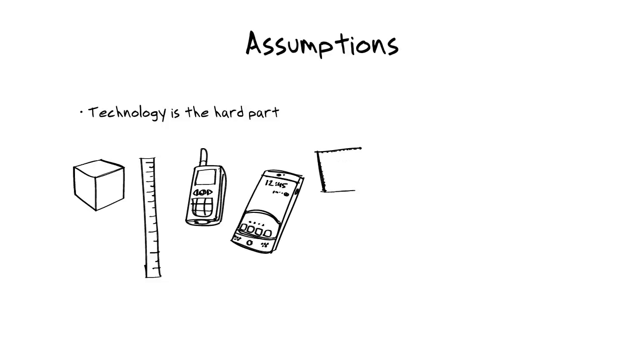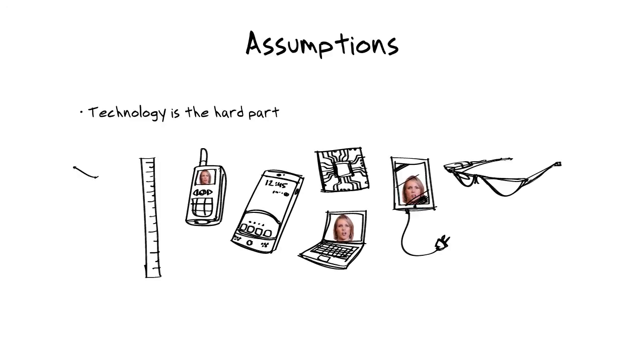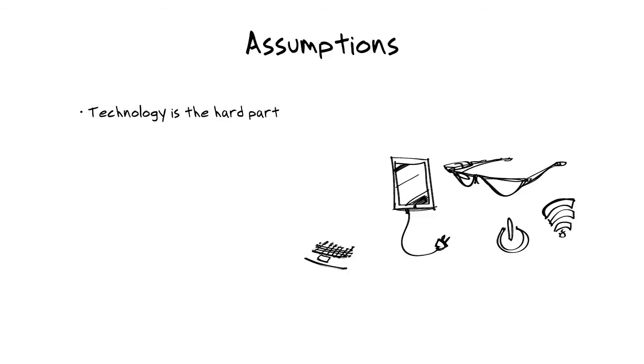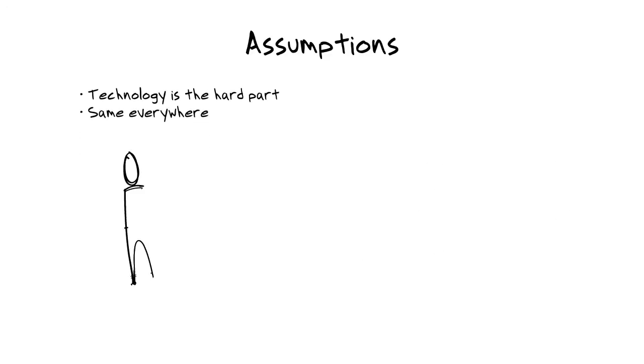When we do this, we're really taking on a few assumptions that absolutely demand to be tested. One of those is that technology is the hard part. People, they're pretty easy and they're pretty similar context to context. The second assumption is that the way it is here on my home turf is probably the way it is largely everywhere else.